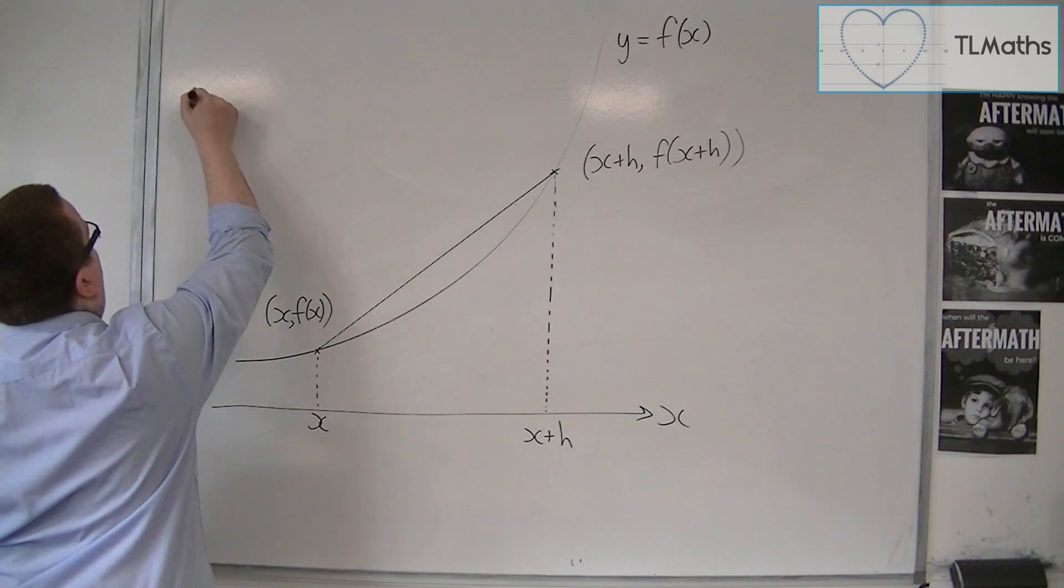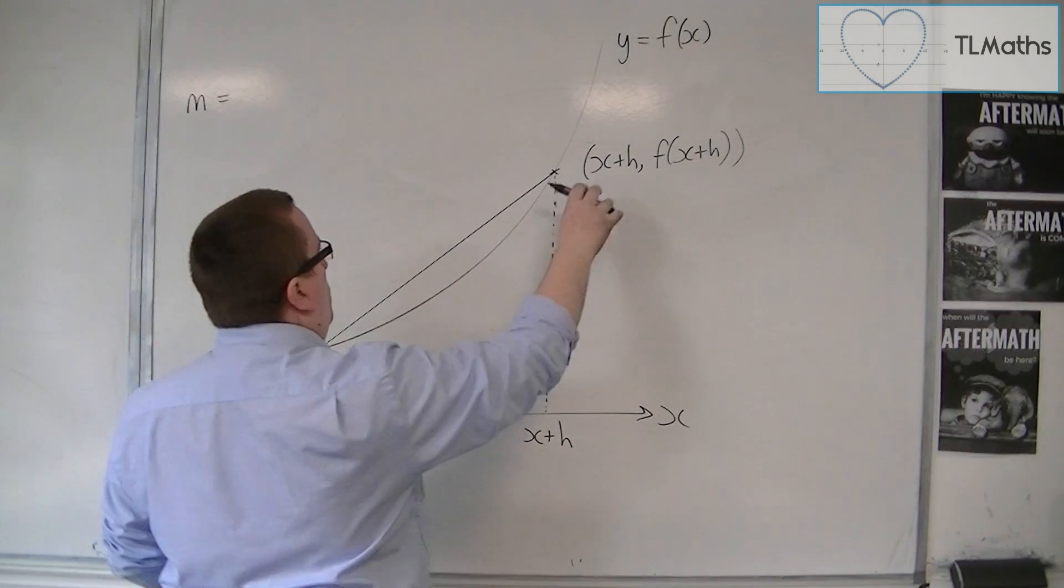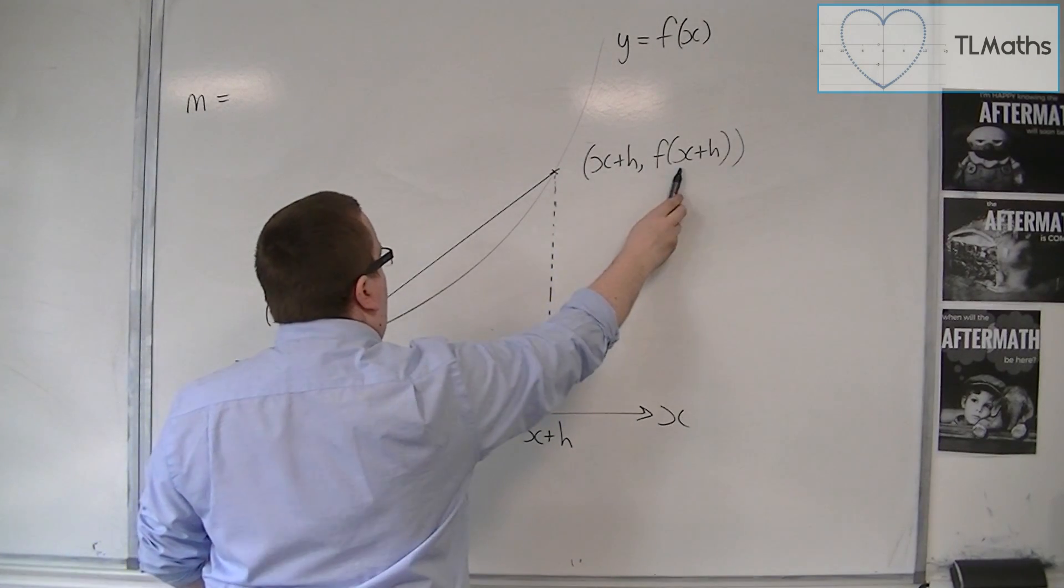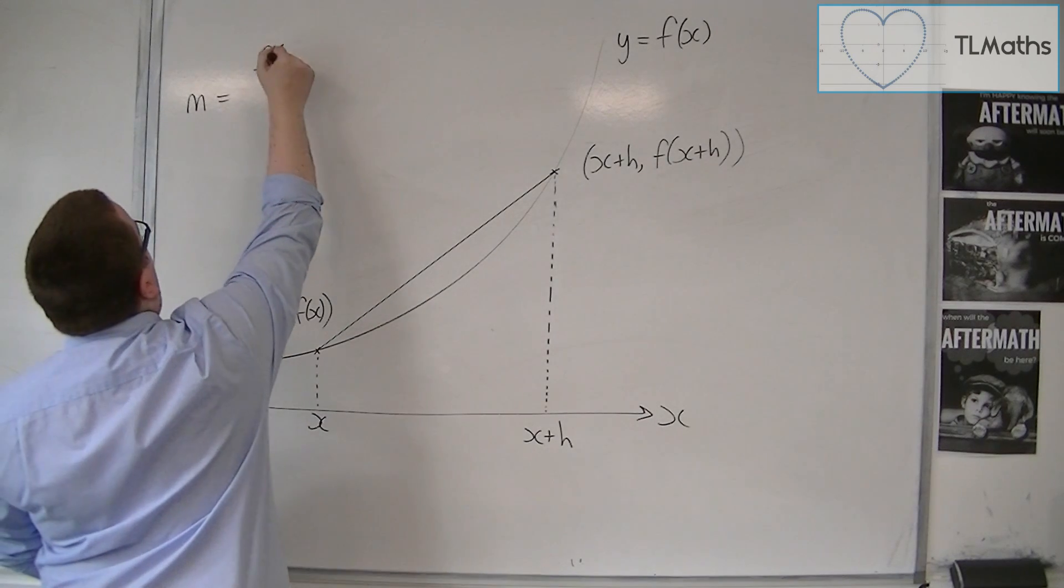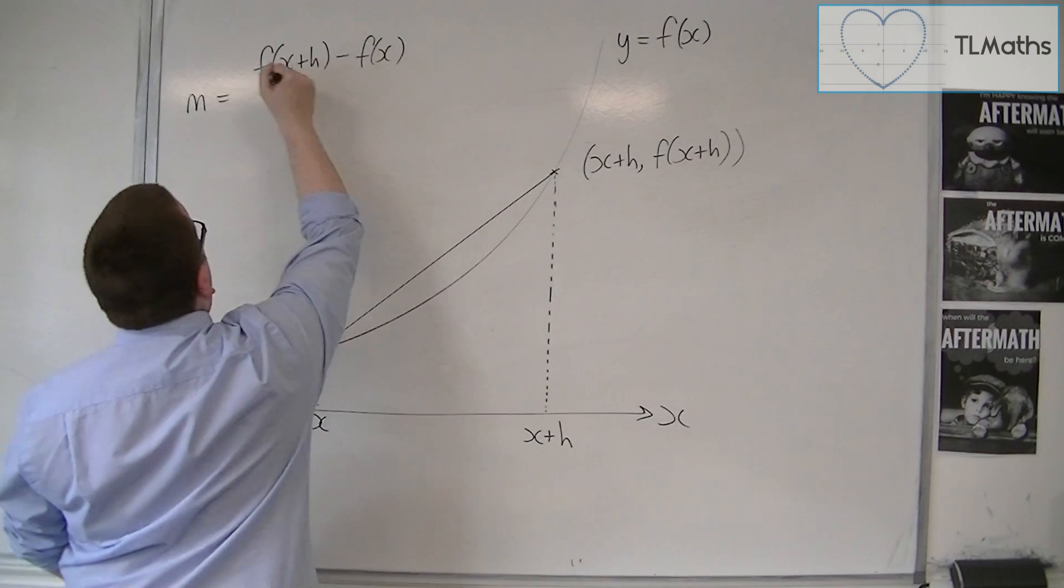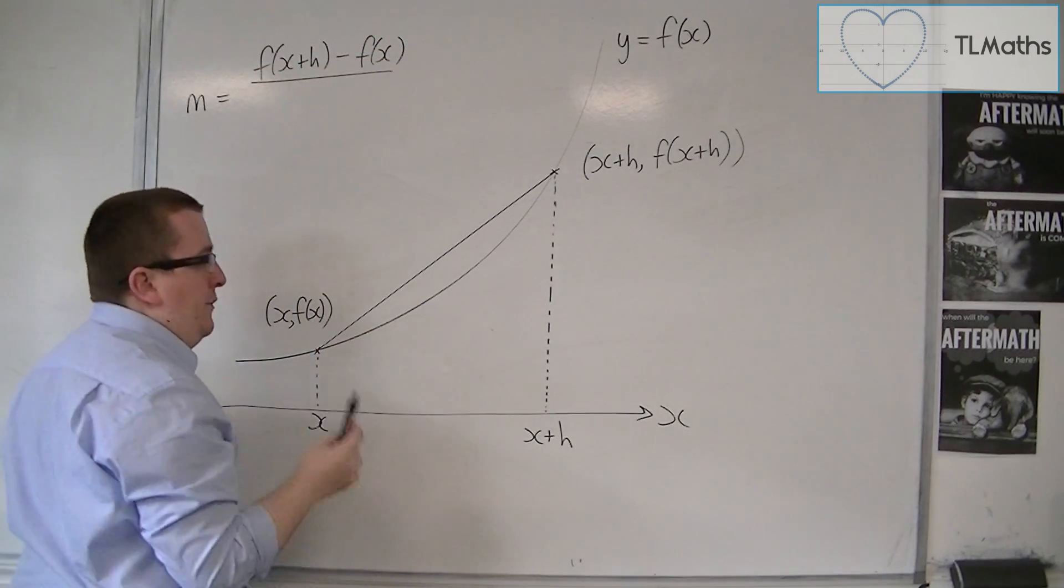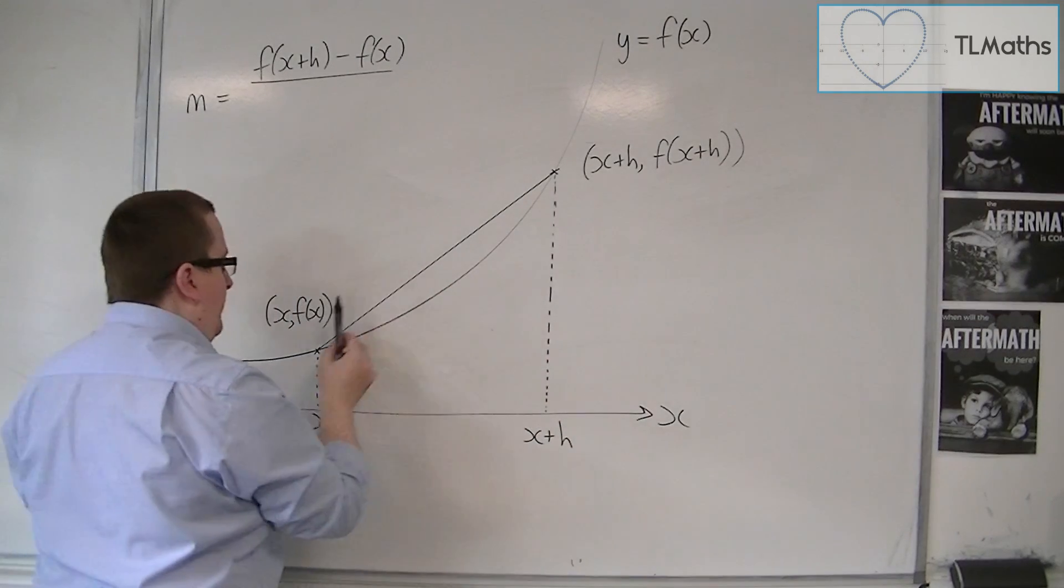So the gradient of that chord, if I just call that m for the time being, will be the difference in the y-coordinate, so this y-coordinate take away that y-coordinate, so f of x plus h take away f of x, divided by the difference in the x-coordinates, so x plus h take away x.